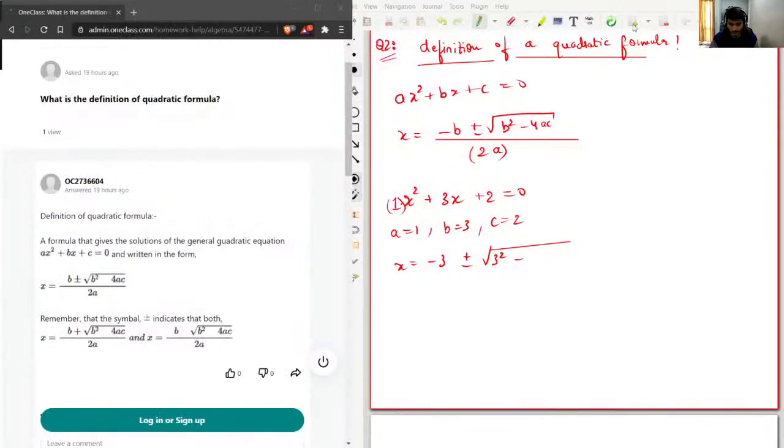So it will be b squared is 3 minus 4 into this is 1 and c will be 2, over 2 times 1. So x will be minus 3 plus minus and the root of this...